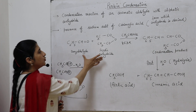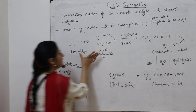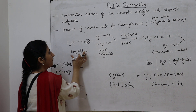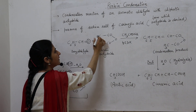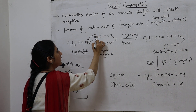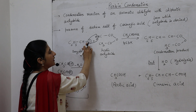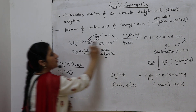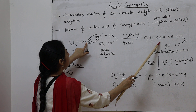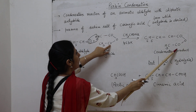When benzaldehyde and acetic anhydride are combined in the presence of sodium acetate, there is a loss of water from these two molecules — the oxygen from benzaldehyde and H₂ from the anhydride. The remaining two molecules are linked to each other with a carbon-carbon double bond, giving a condensation product: C₆H₅-CH=CH-CO-O-CO-CH₃.